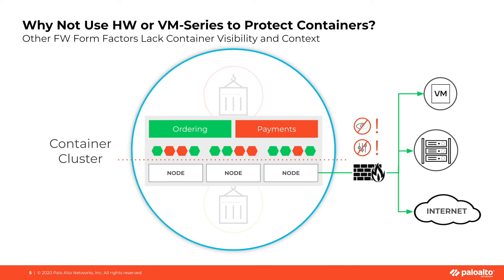The solution to this problem is to bring the firewall into the cluster, so that you can enforce true layer 7 policies at the node, pod, app, namespace, tag, and label level within your Kubernetes cluster, to ensure that you have visibility into what is going on within that cluster. And that's exactly what we've done with CN Series.